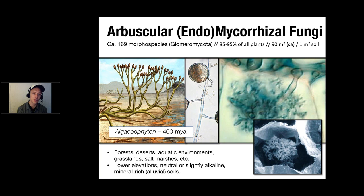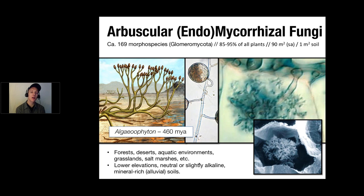On the left, we're showing a photo of the first fossilized plant with roots from about 460 million years ago, and on its roots we find an arbuscular mycorrhizal fungus that looks very almost identical to species we find today. So it's a very ancient relationship that hasn't changed necessarily a ton over all these eons — incredibly efficient, found throughout the world. They're found on every continent except Antarctica, in forests, deserts, aquatic environments, grasslands, salt marshes — pretty much everywhere.